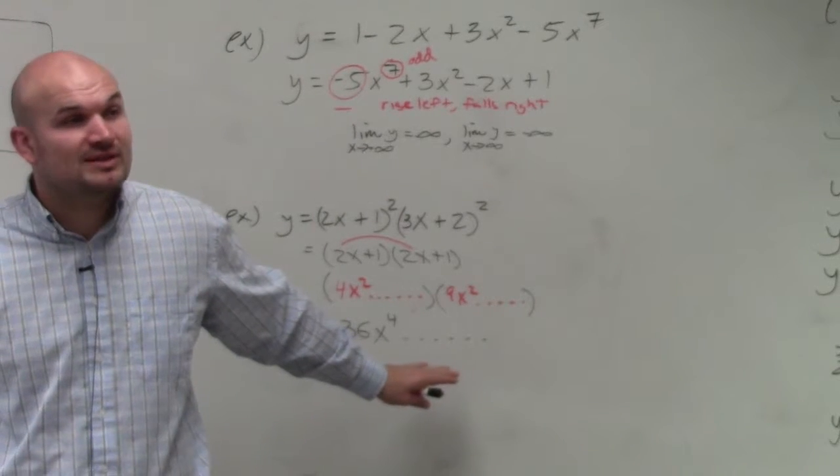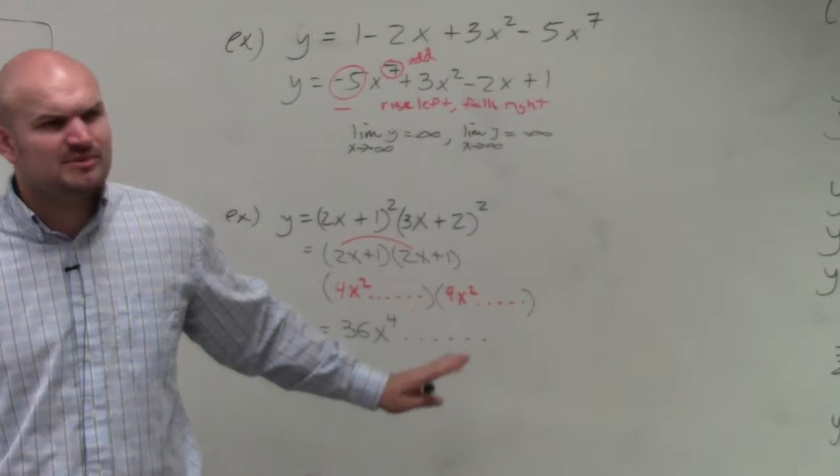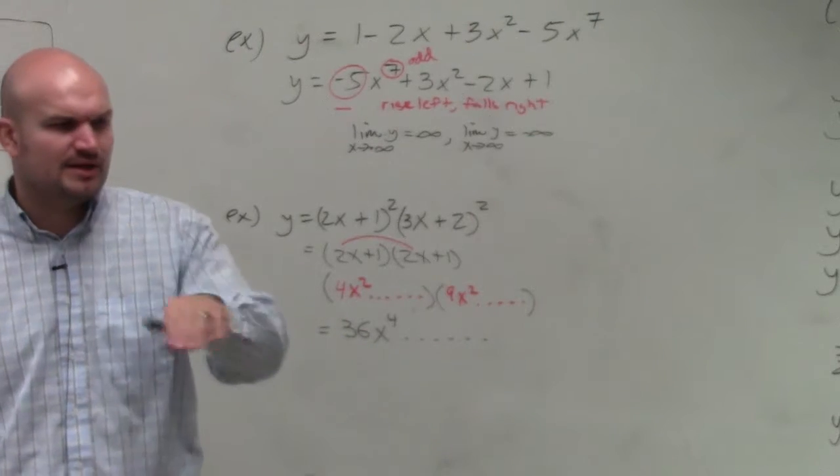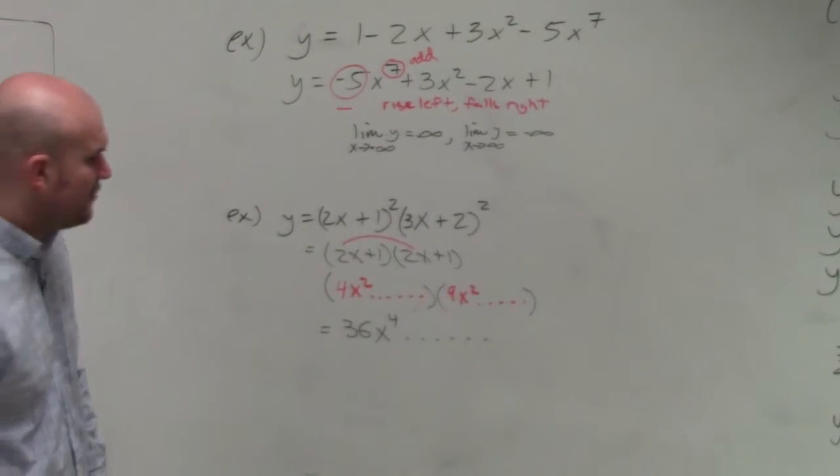So that's our leading term. We have no idea what the rest of the equation is, but that's another term. We still have five minutes, so it's OK. I still want to go over some questions on this. So it's 36x to the fourth.